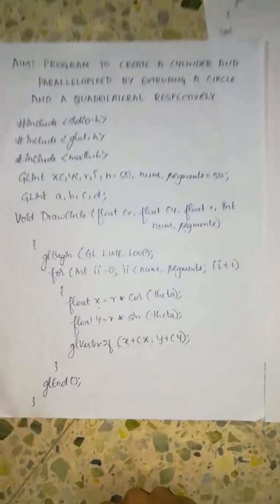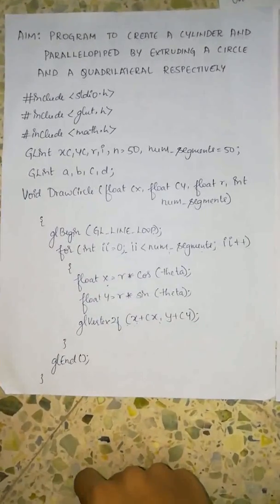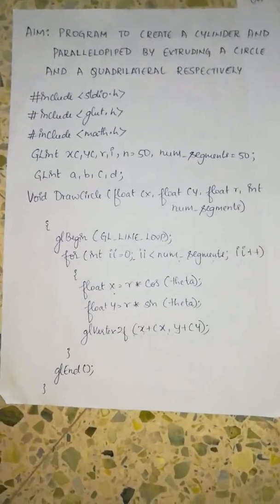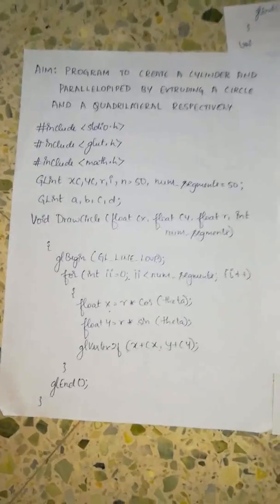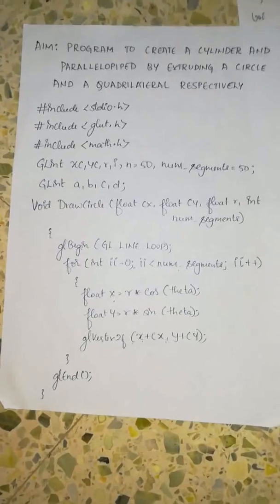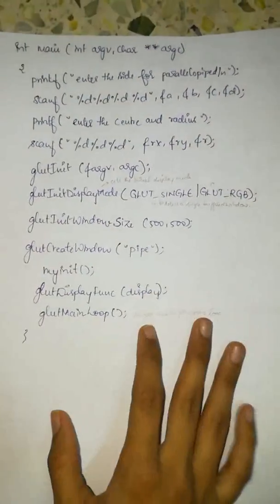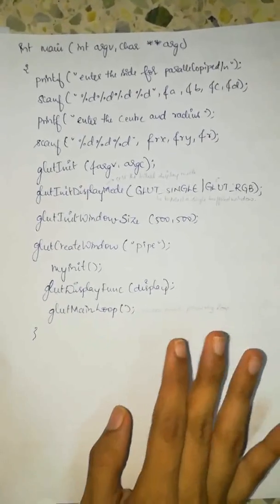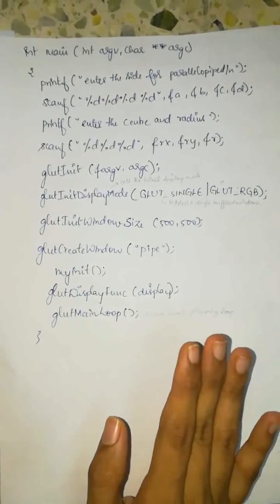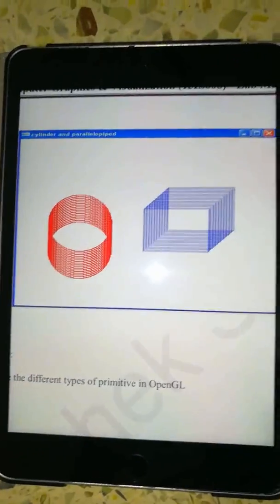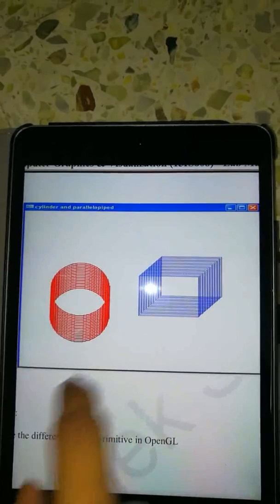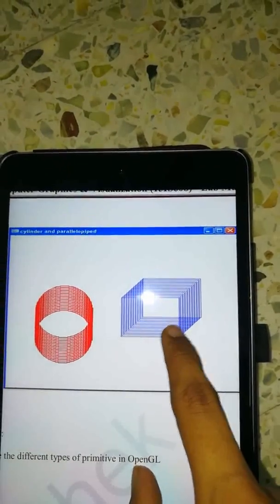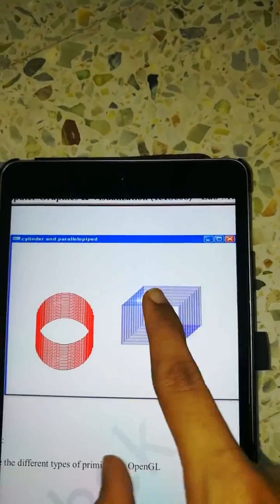Hello friends. Here we are to study a new program using OpenGL. This program is to create a cylinder and a parallel pipe by extruding a circle and a quadrilateral respectively. Before we get into the program let us first look at the main function and then go to each and every function step by step. This is how the output will look — you will have one circle and each of the iterative circles will make a cylinder, and you will have one rectangle initially and each of the iterative rectangles will form a parallel pipe at the end.